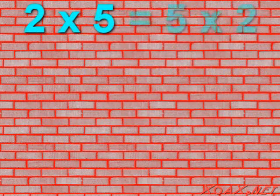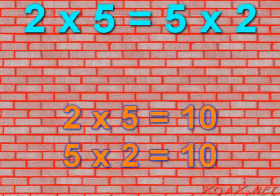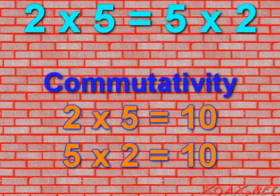That is 2 times 5 equals 5 times 2, and the product is 10 either way by commutativity.